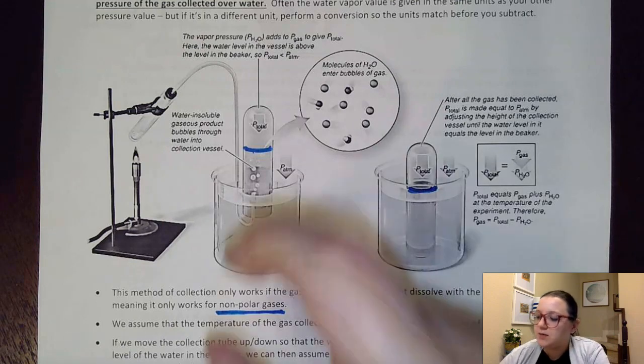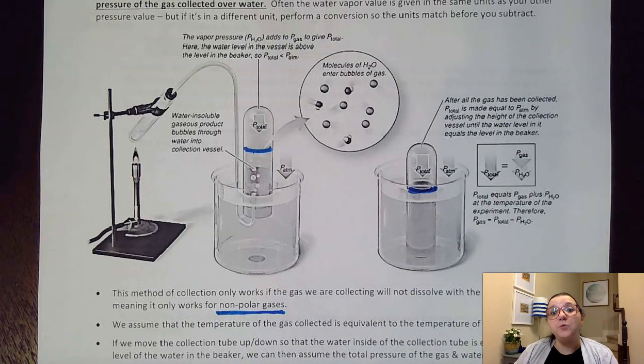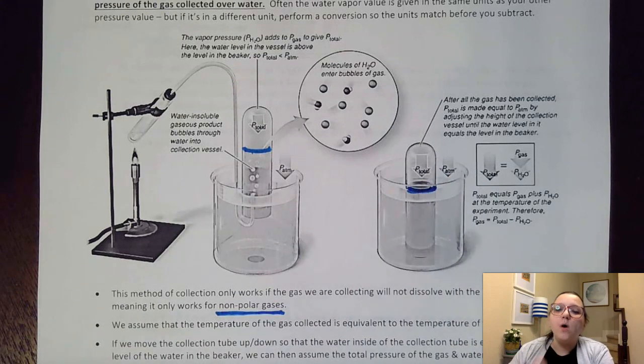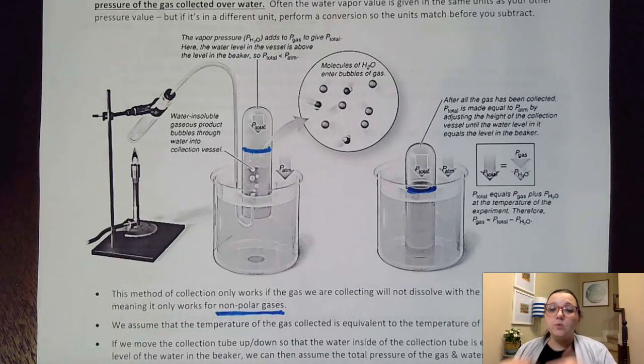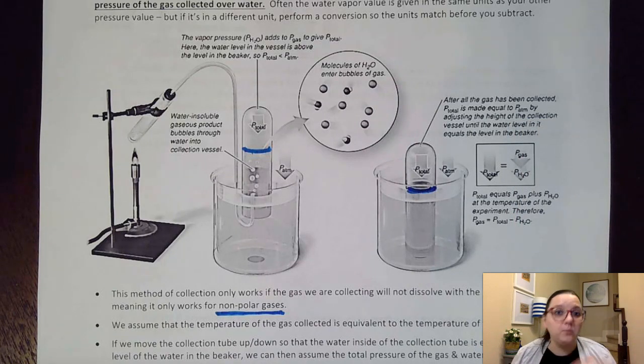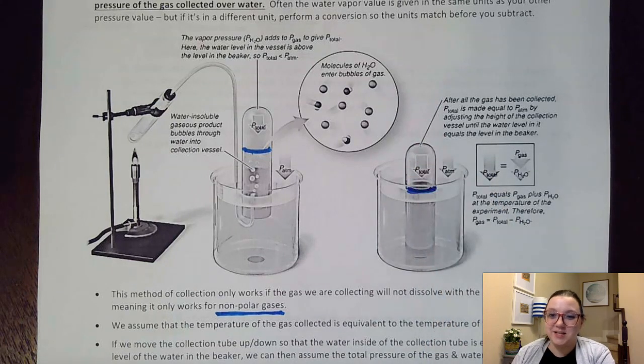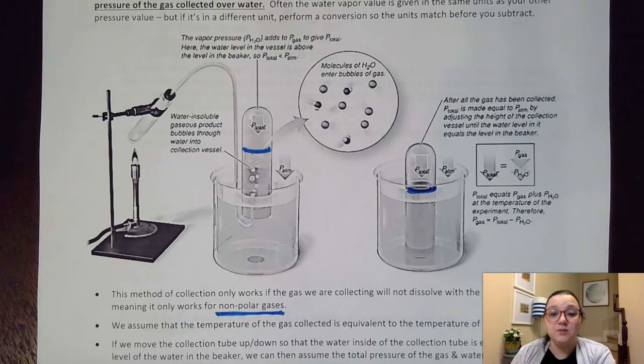So to be able to do that, what we would need to do is to take our collection tube and move it up and down until the water level is equal in both the collection tube as well as in the large container of water. Once those two water levels are equal, what we can assume is that the total pressure in this container is equal to the pressure of the atmosphere, which obviously we could get based off of what elevation we're at. We could look at a barometer even to measure that. Most of the time we assume we're at sea level and so that our pressure of the atmosphere would be 760 millimeters of mercury. But we could always measure the atmospheric pressure. It's a lot easier to measure that than the pressure that's inside of this collection tube. So once we have that pressure that's inside, we can then subtract off the water vapor pressure and get just the pressure of the gas by itself to then do some other calculations with it.